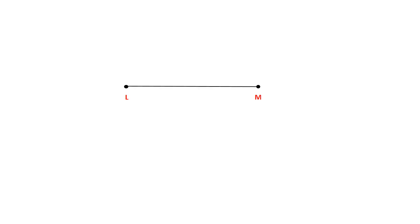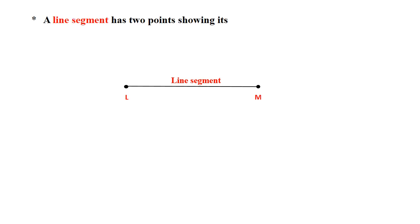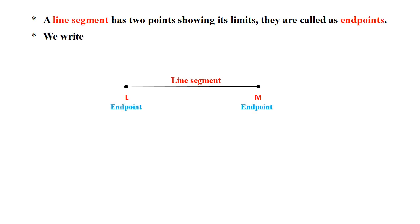If we have two different points and we want to join them, then this straight line is called a line segment. A line segment has two points showing its limits and they are called end points. So we have the end points as point L and point M. We write line segment LM as seg LM in short.